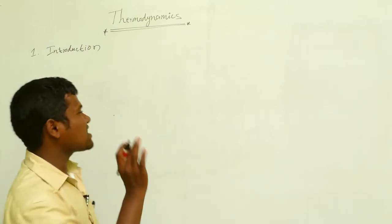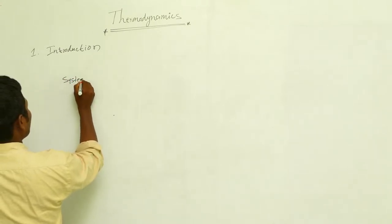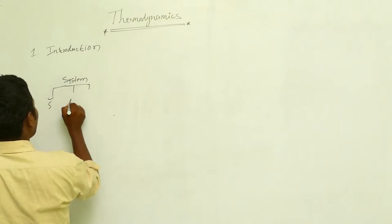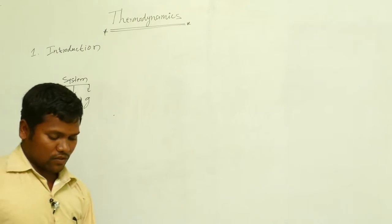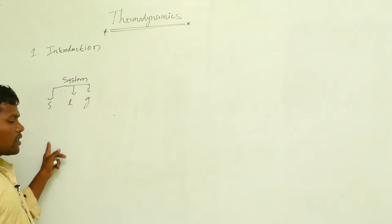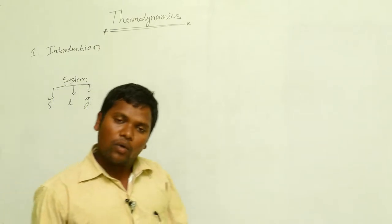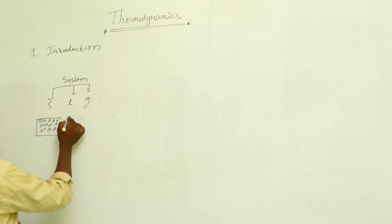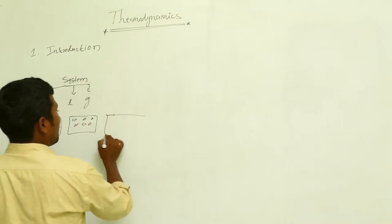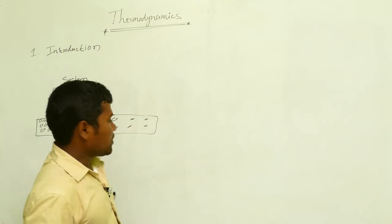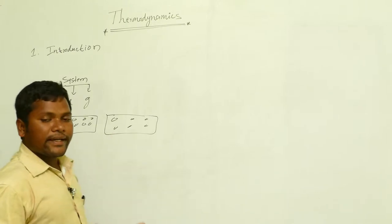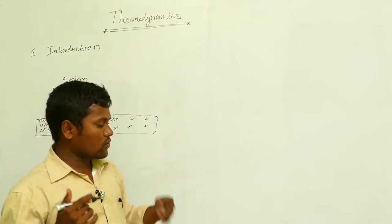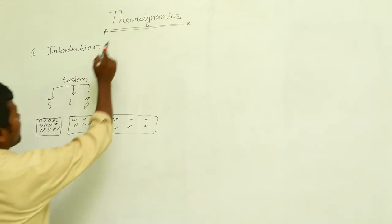To explain thermodynamics we need a system. Generally systems are of three types: solid, liquid, and gas. All these systems are made of particles. In solids, particles are very tightly bound. In liquids, there is a little bit of gap. In gases, particles are very far apart — those are gas molecules. In thermodynamics we consider this system or substance.